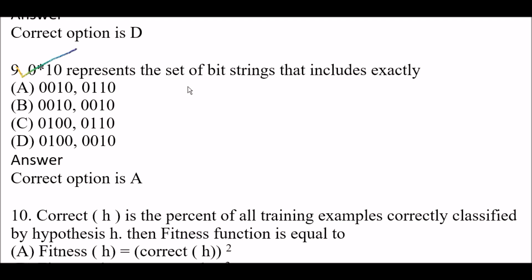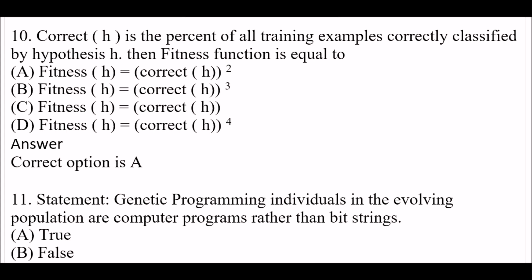0*10 represents the set of bit strings that includes exactly — Option A: 0010 and 0110; Option B: 0010 and 0010; Option C: 01**00 and 0110; Option D: 0100 and 0010. Right answer is Option A: 0010 and 0110. Correct h is the percent of all training examples correctly classified by hypothesis h, where h stands for hypothesis.